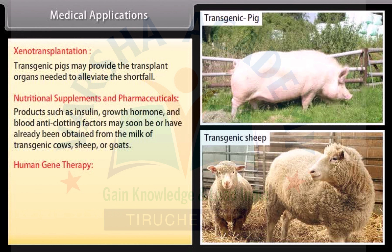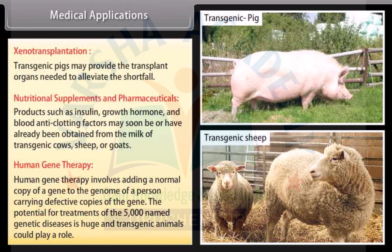Human gene therapy involves adding a normal copy of a gene to the genome of a person carrying defective copies. The potential for treatment of the 5,000 named genetic diseases is huge, and transgenic animals could play a role.